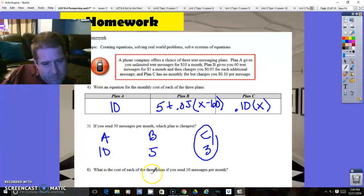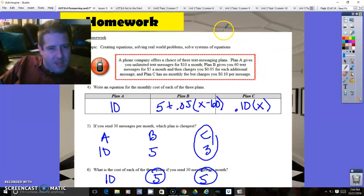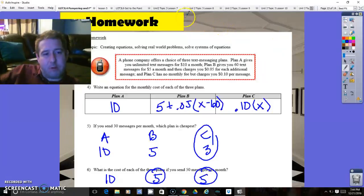For number six, what is the cost of each of the three plans if you send 50 texts? Plan A, 50 messages per month still costs $10. Plan B still costs $5 because you're still not even sending the 60 texts. And plan C, 50 texts, that looks like that one's going to be $5 also. So it looks like these two are going to be exactly the same. Once again, thanks again for watching. I know I went over 12 minutes again. Please give it a like if I help you learn something and subscribe if you haven't done so already. Thanks again.